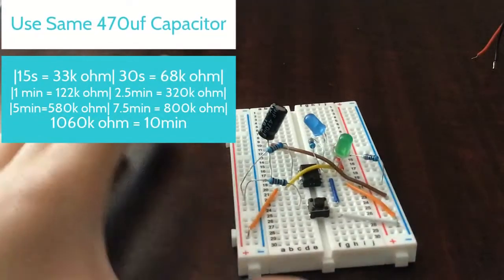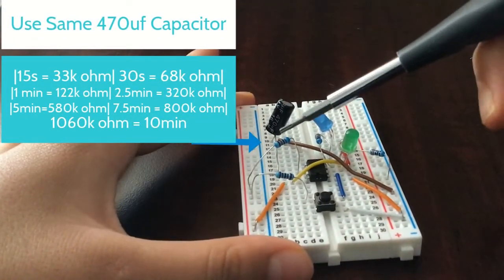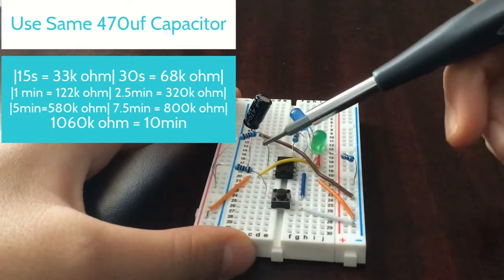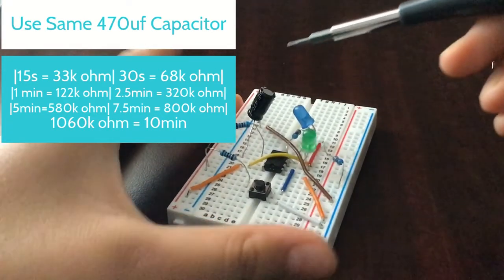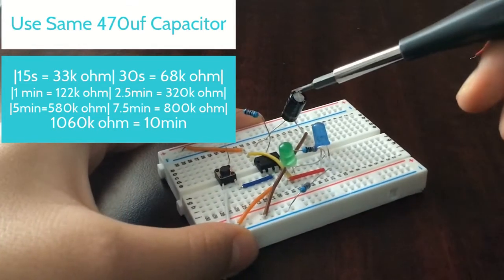Before we go further, look at this chart above. This chart will help you find the resistor that you need for your timing resistor. In this case I'm using a 68 kilo ohm resistor to make it go for about 30 seconds.